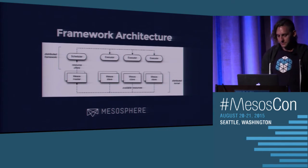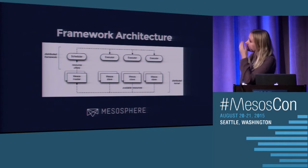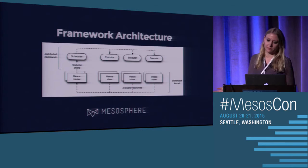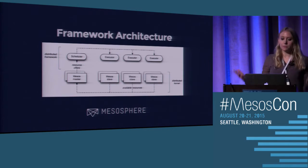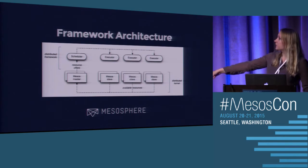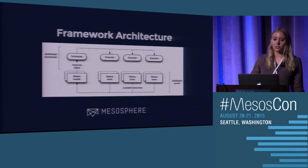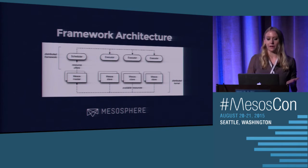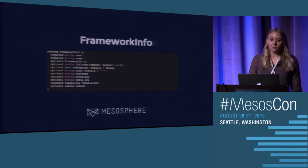Now I'll pass it to Elizabeth to cover the API overview. The overall framework architecture of Mesos: we have the Mesos master and the Mesos agents. The agents have available resources — CPU, disk, memory — and offer these resources through the Mesos master. Your distributed application or framework can then use these resources. The scheduler launches tasks on different executors on the agent nodes, and can accept either a full or partial amount of the offer. Any remaining offer gets re-offered to another framework or back to the same one in the future.